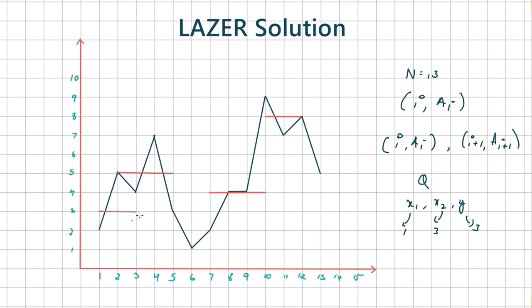For each query line we have to return the number of line segments it is intersecting with. For example, the first red line intersects with one line segment, and the second red line intersects with three line segments. A query line is said to intersect a line segment if both lines either intersect or touch each other, except when the rightmost endpoint of the dark blue line coincides with the leftmost point of the red line, or the leftmost point of the dark blue line coincides with the rightmost point of the red line — those cases are not counted as intersecting.